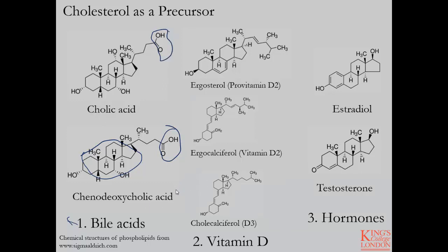Vitamin D is produced in the skin following exposure to UVB rays, and its precursor is also cholesterol. You can see the conserved sterol ring in the pathway to the production of vitamin D — the ring may undergo various opening, closures, saturation, and addition of methyl groups, but generally you start with the same starting point as seen with ergosterol. A third example would be hormones — in particular testosterone and estradiol, both of which use cholesterol as their precursor in the synthesis pathway.